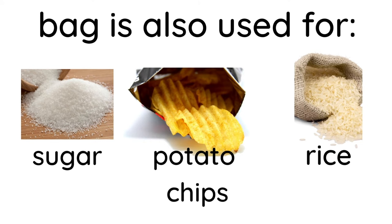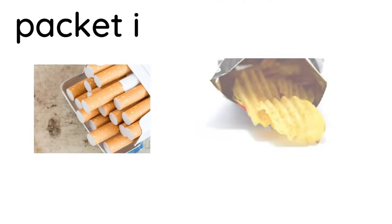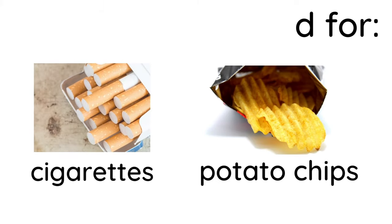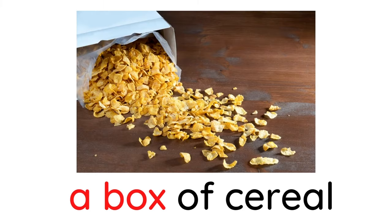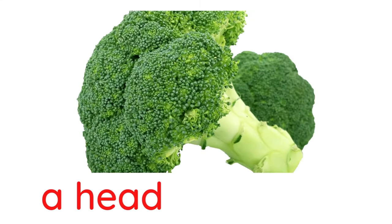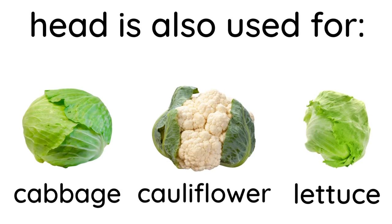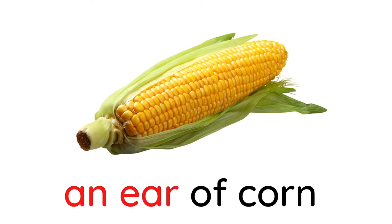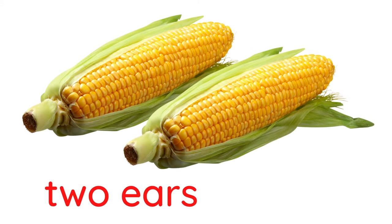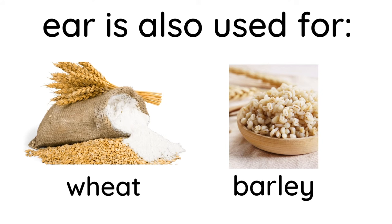Bag is also used for sugar, potato chips, and rice. A packet of biscuits or cookies. Packet is also used for cigarettes or potato chips. A box of cereal. Box is also used for chocolates. A head of broccoli. Two heads of broccoli. Head is also used for cabbage, cauliflower, and lettuce. An ear of corn. Two ears of corn. Ear is also used for wheat or barley.